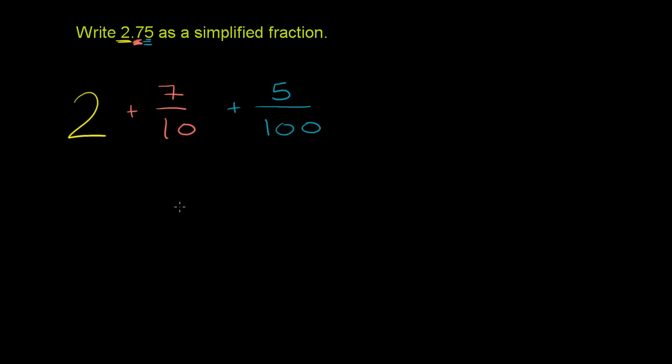Now, if I want to write this as a simplified fraction, or really as a mixed number, I have to merge these fraction parts. To add two fractions, you have to have a common denominator. To figure out the common denominator, you just have to think about the least common multiple of 10 and 100. And that's 100.